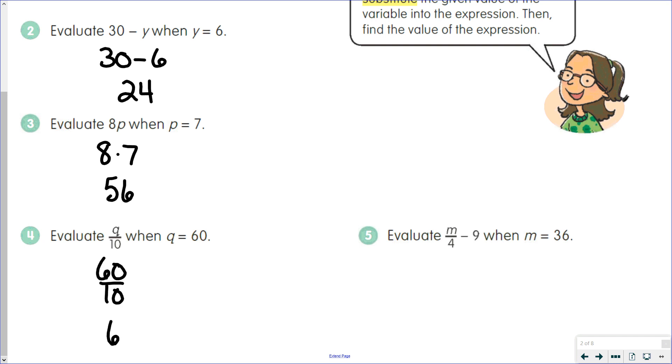And evaluate M over 4 minus 9 when M equals 36, which means we're going to do 36 over 4 minus 9. We'd follow our order of operations, so we do 36 divided by 4, which is 9. And then we would have 9 minus 9, which is 0.